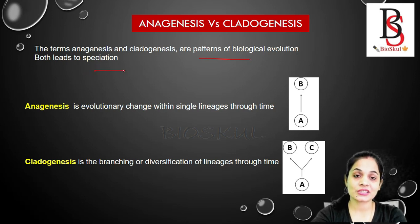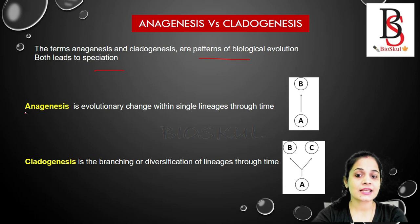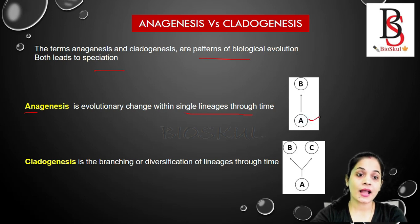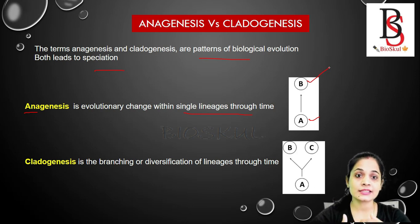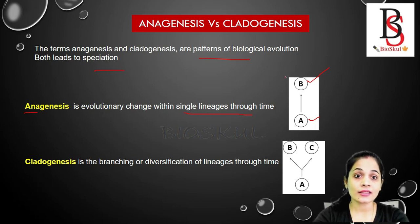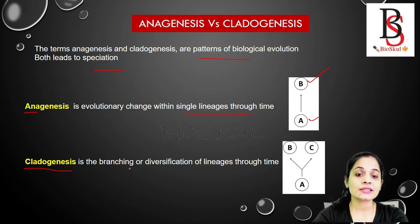Both anagenesis and cladogenesis lead to speciation, which means the formation of new species. What is anagenesis? 'Ana' means new, 'genesis' means formation — so anagenesis is the evolutionary change within a single lineage through time. Species A gradually changes into a different species, species B. One species forms another species, and the changes take place within a single lineage.